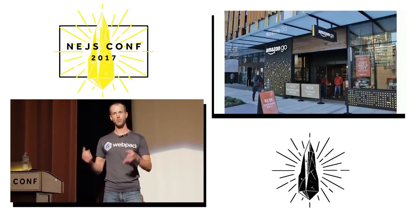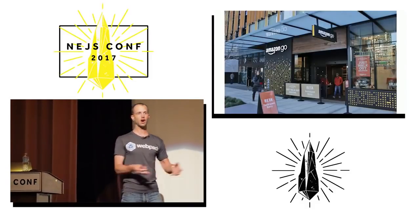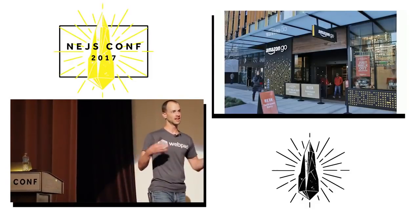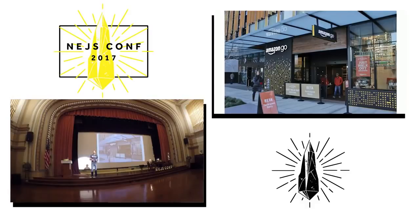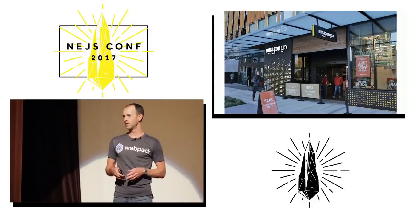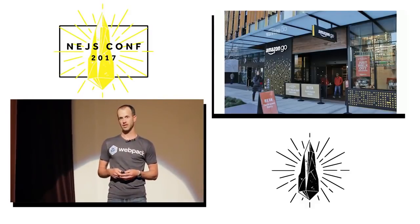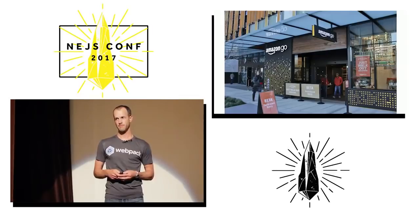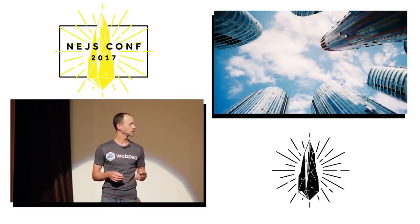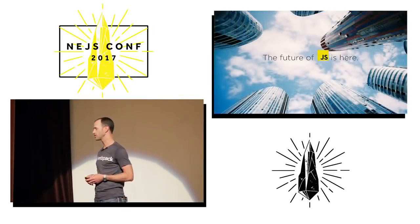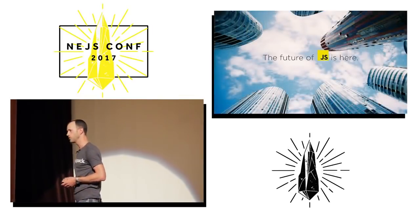At Amazon Go, you grab what you need and you walk out the door, and sensors charge you accordingly. The future is already here — it's just not evenly distributed. And this principle of course applies to JavaScript as well.